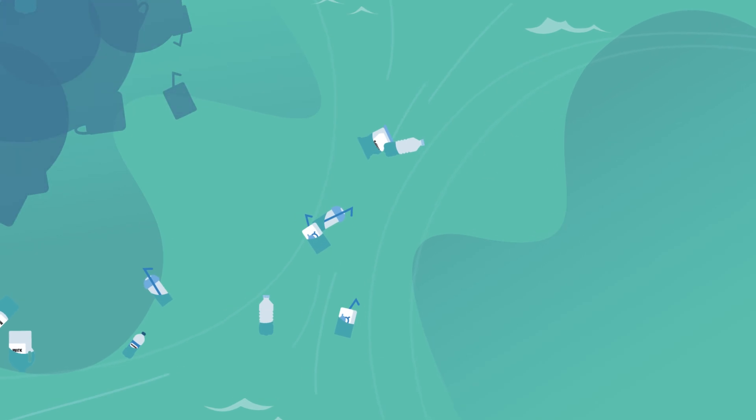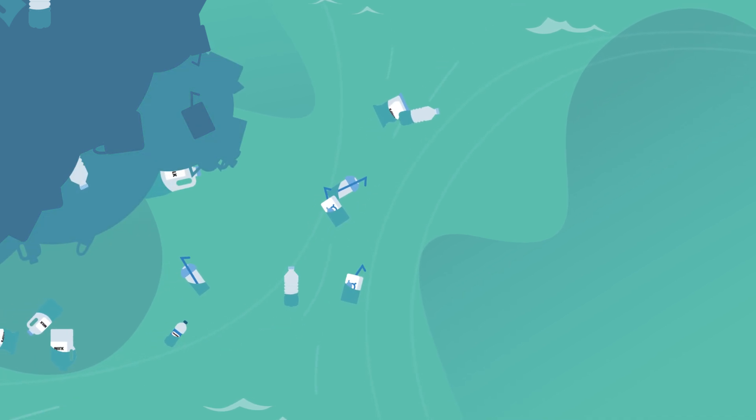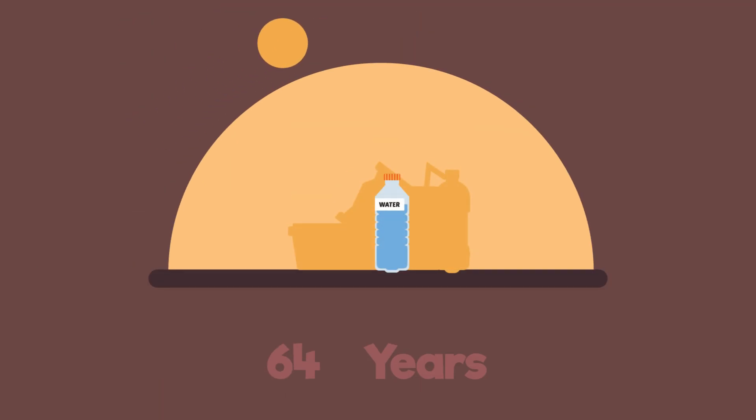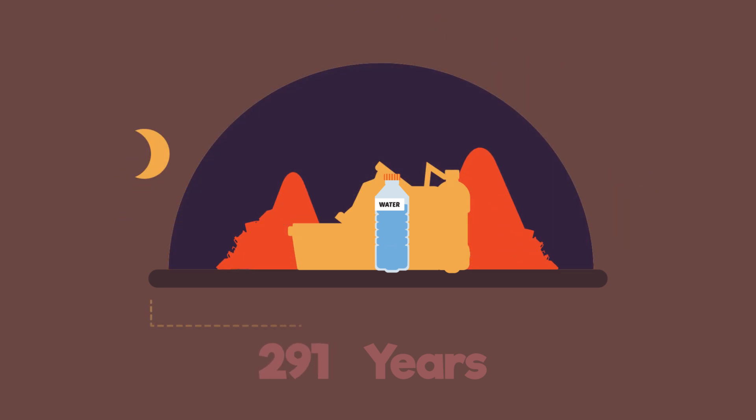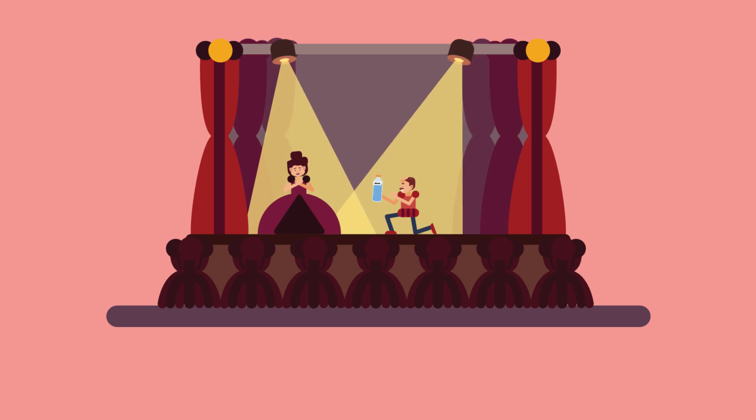But this is also the problem with plastic, or rather how we as humans are choosing to use plastic. Plastics can take a long time to break down naturally or biodegrade. That plastic bottle you just used will be around for at least another 400 years. So if Shakespeare had had a water bottle, we would still be able to use it today.